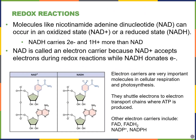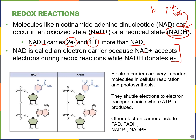When we break down glucose for energy in many small steps, every time energy is released we capture some of it, sometimes as high-energy electron carriers like NADH. The oxidized version is NAD+, and when it receives electrons it becomes NADH — the reduced state — which has really high potential energy. NADH is an electron carrier because NAD+ accepts electrons whereas NADH can donate electrons. It carries two extra electrons and a proton compared to the oxidized state.